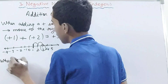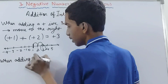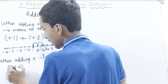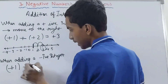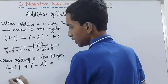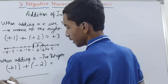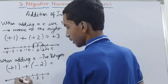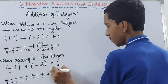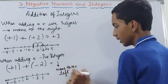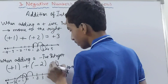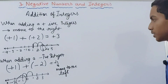The next case: when adding a negative integer to any number, we move to the left on the number line. Take plus 1 and add minus 2. Starting at plus 1, we move two places to the left: to 0, then to minus 1. So plus 1 plus minus 2 equals minus 1.